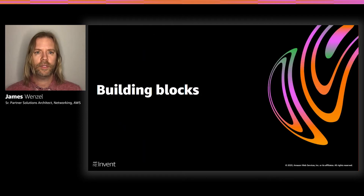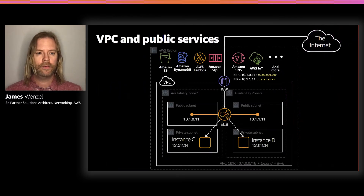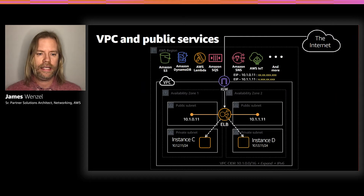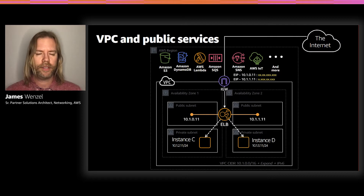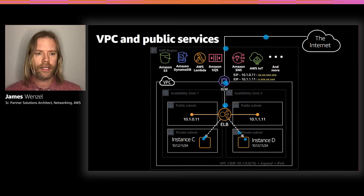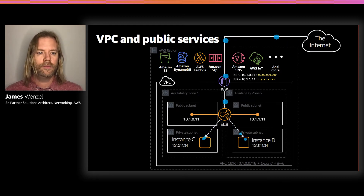Let's start off with the building blocks. This slide shows the basic three-tiered web application. We have the internet, an ELB, and our instances behind it. At the top, we have AWS Public Services — sometimes referred to as services in the public cloud versus in the private cloud of a VPC — including S3, Amazon DynamoDB, Lambda, and many more.